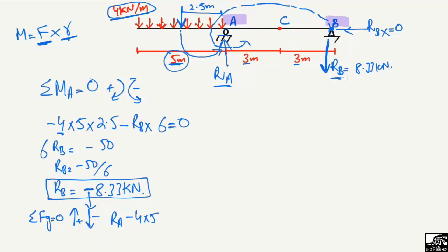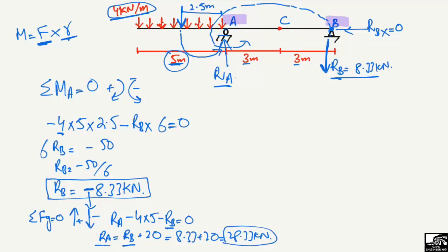Also, RB is acting downward, so minus RB = 0. Rearranging: RA = RB + 20 = 8.33 + 20 = 28.33 kN. The positive sign confirms our assumption was correct — RA = 28.33 kN acting upward.